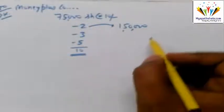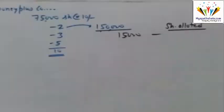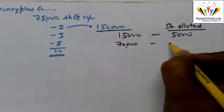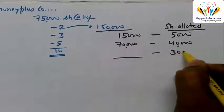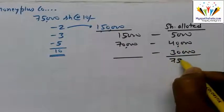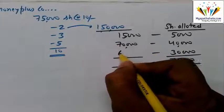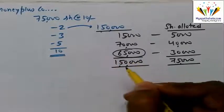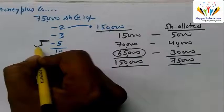The allotment was done as follows: applications for 15,000 were in one group. Only 75,000 shares could be allotted out of 1,50,000 applications, leaving 65,000 excess. Another group had 30,000 shares. Money in excess of allotment requirements — you could also get paid for allotment.